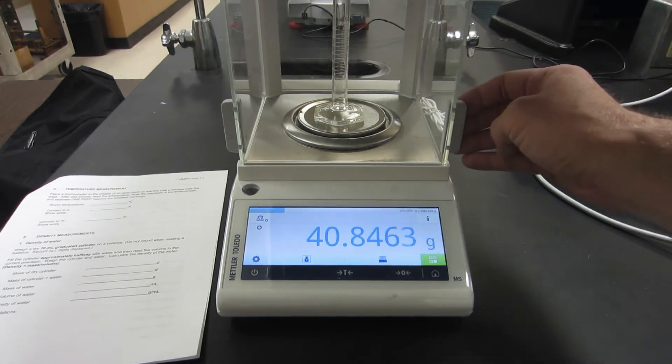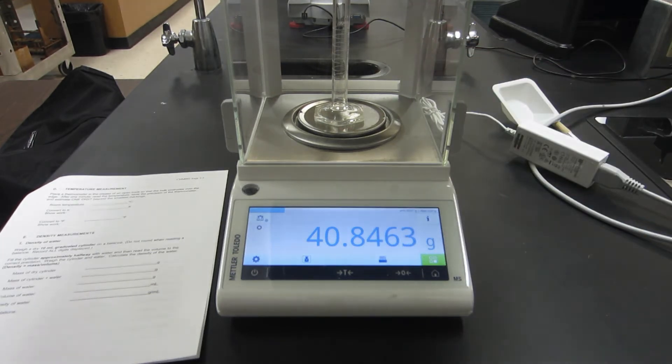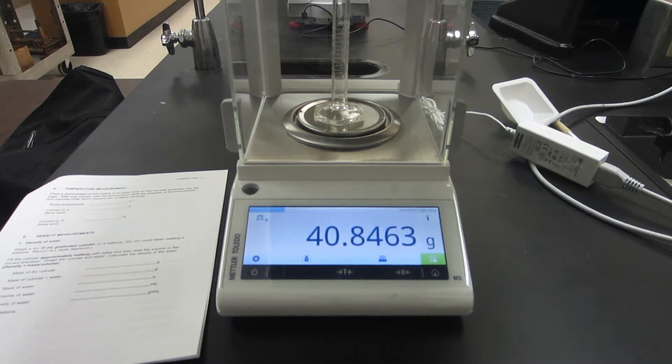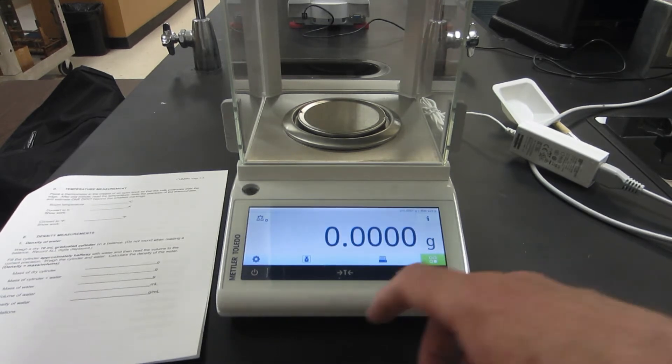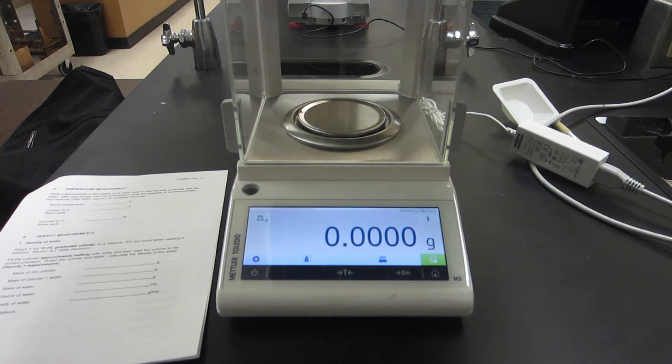Make sure you close all the doors on the balance, and there we go. There's the mass of the empty graduated cylinder, so you can record that on your report sheet.